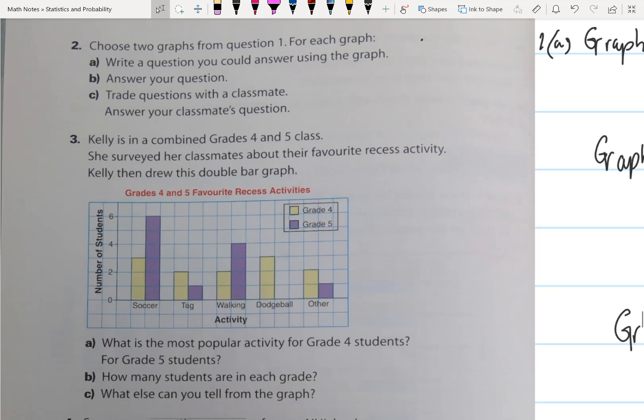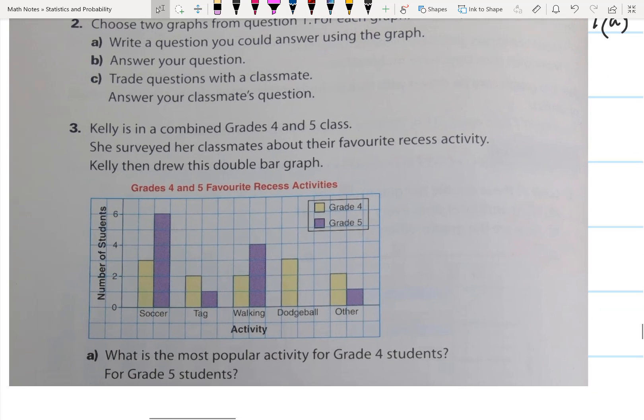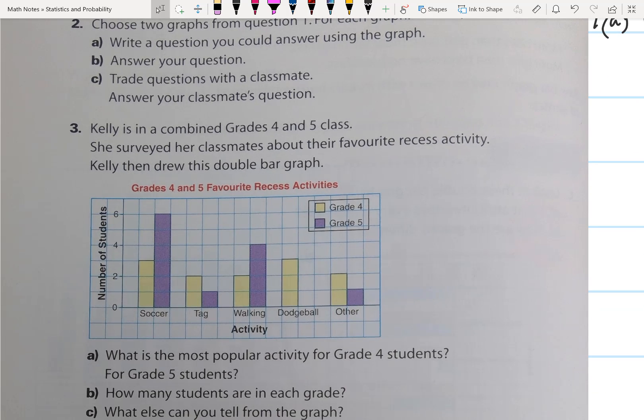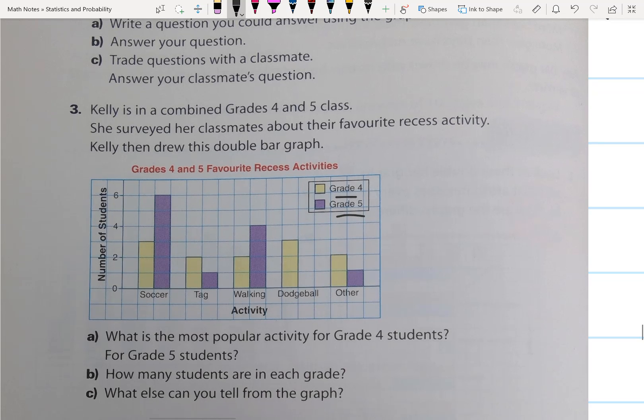Kelly is in a combined grade 4-5 class. She surveyed her classmates about their favorite recess activity. Kelly then drew this double bar graph to make a comparison between the grade 4s and the grade 5s. Question A asks what is the most popular activity for grade 4 students? Well, grade 4 students are the yellow bars. We can see that soccer and dodgeball are the most popular activities for grade 4 students.